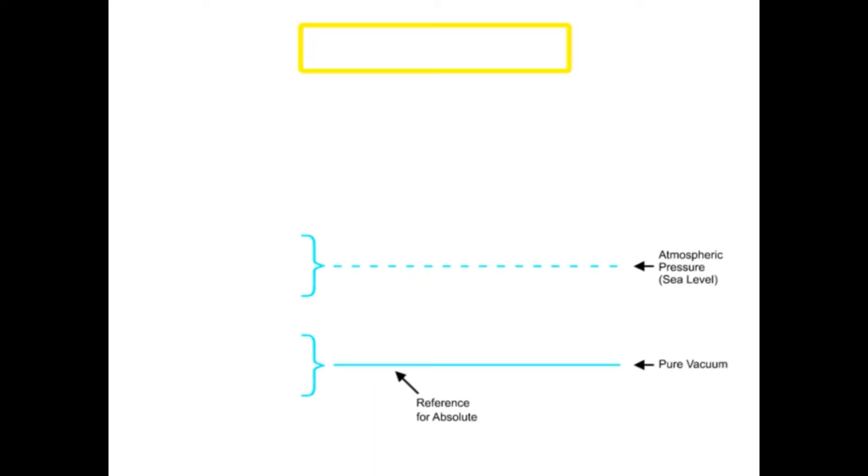Absolute pressure scale uses the absence of pressure referred to as absolute zero as a reference. In a pure vacuum, absolute zero occurs and pressure readings can only be positive.